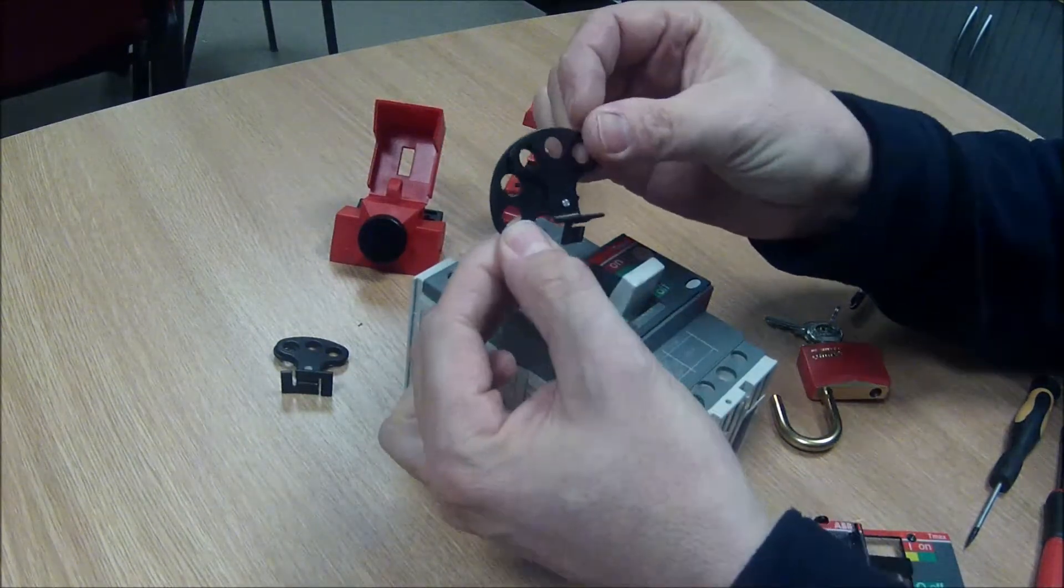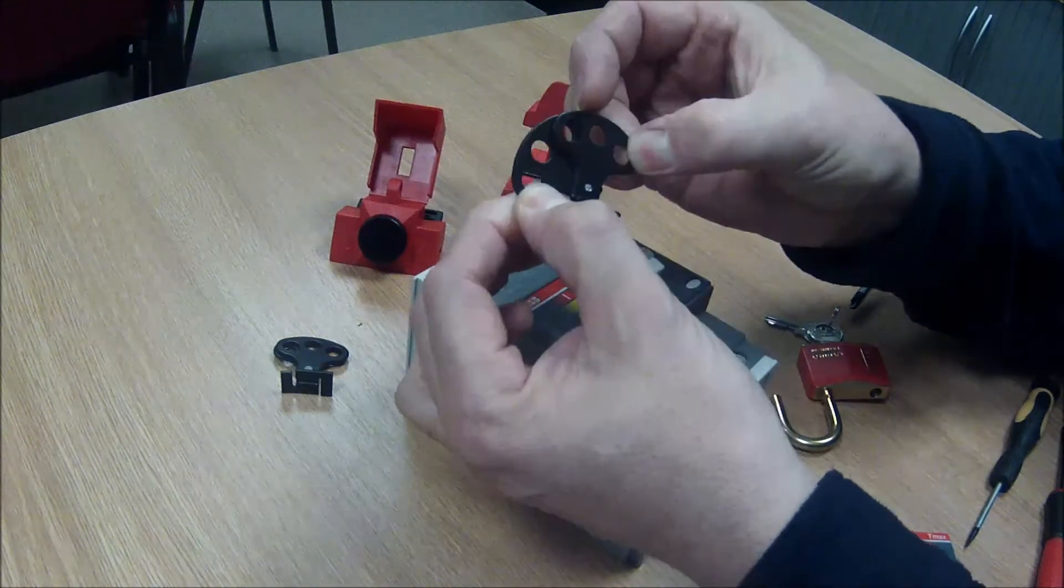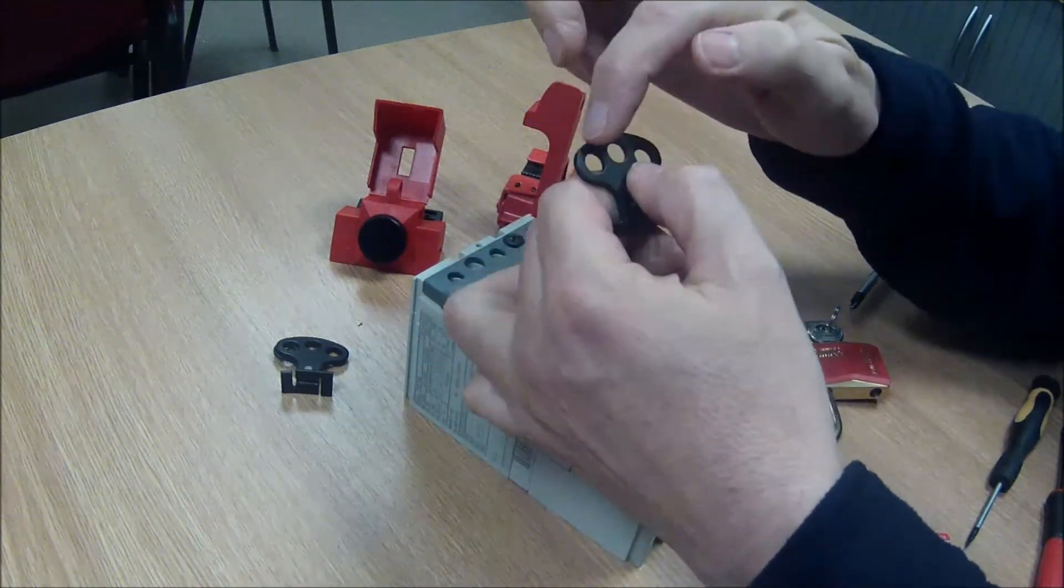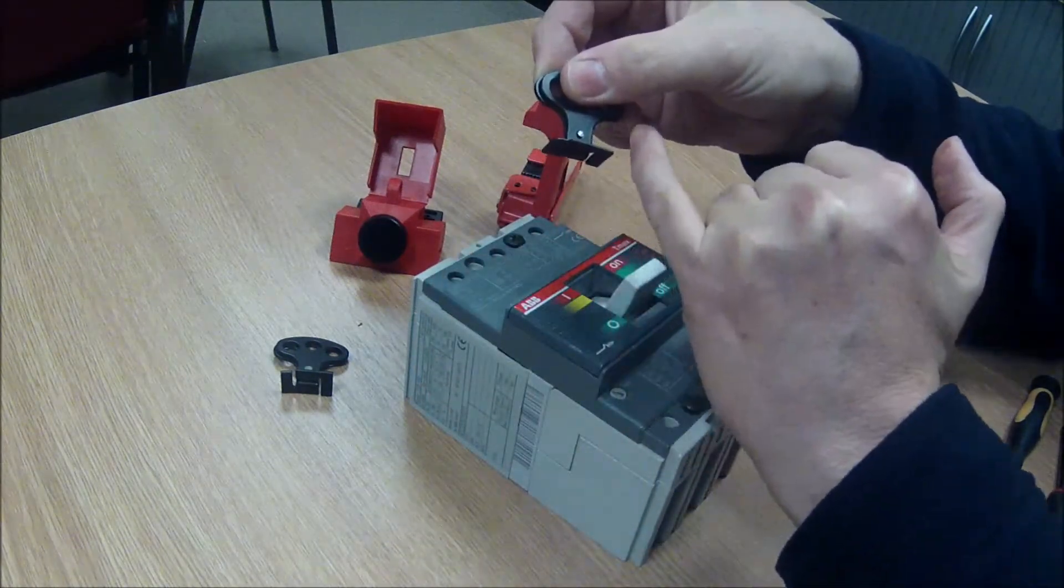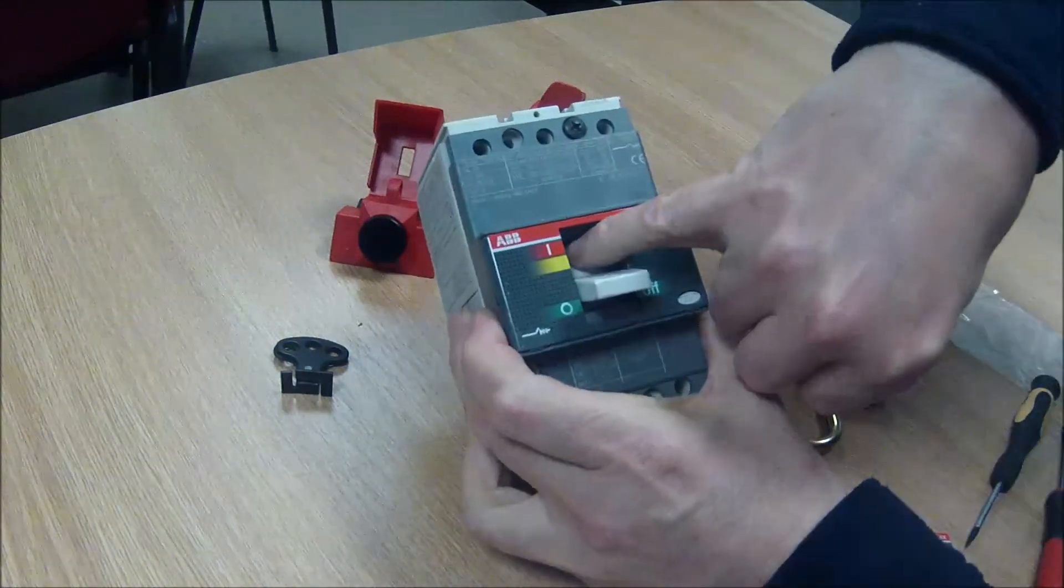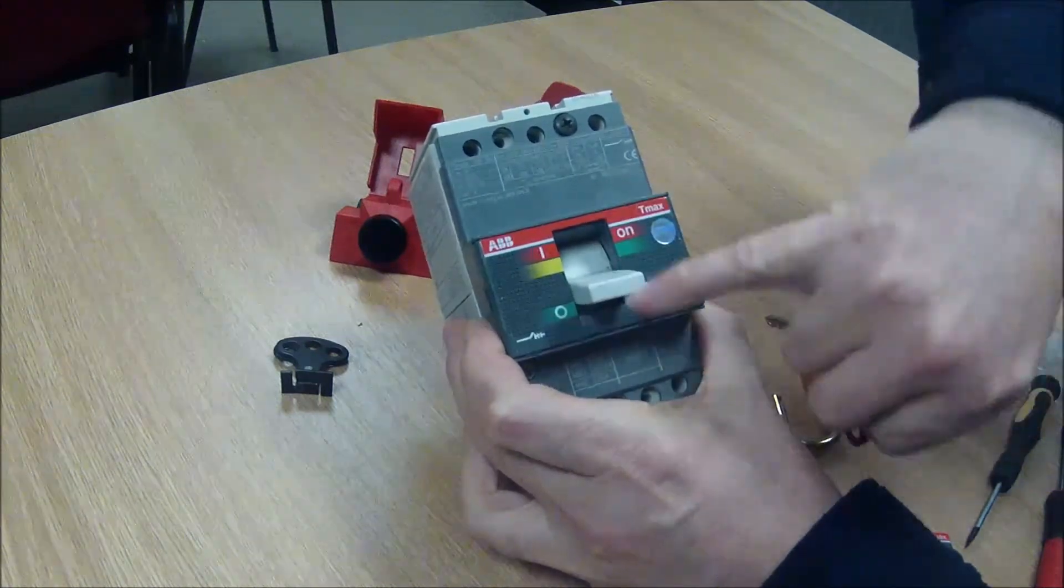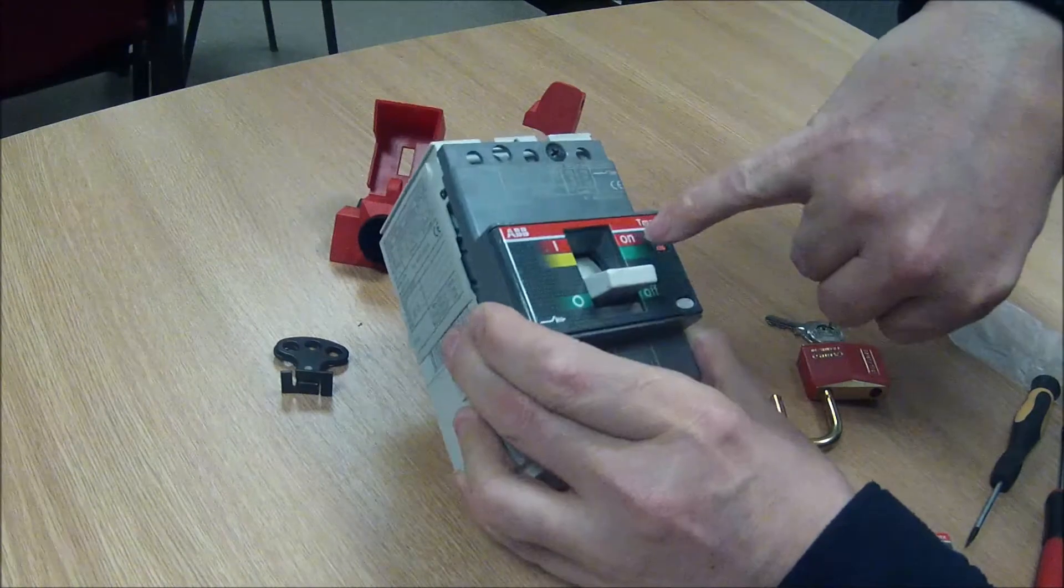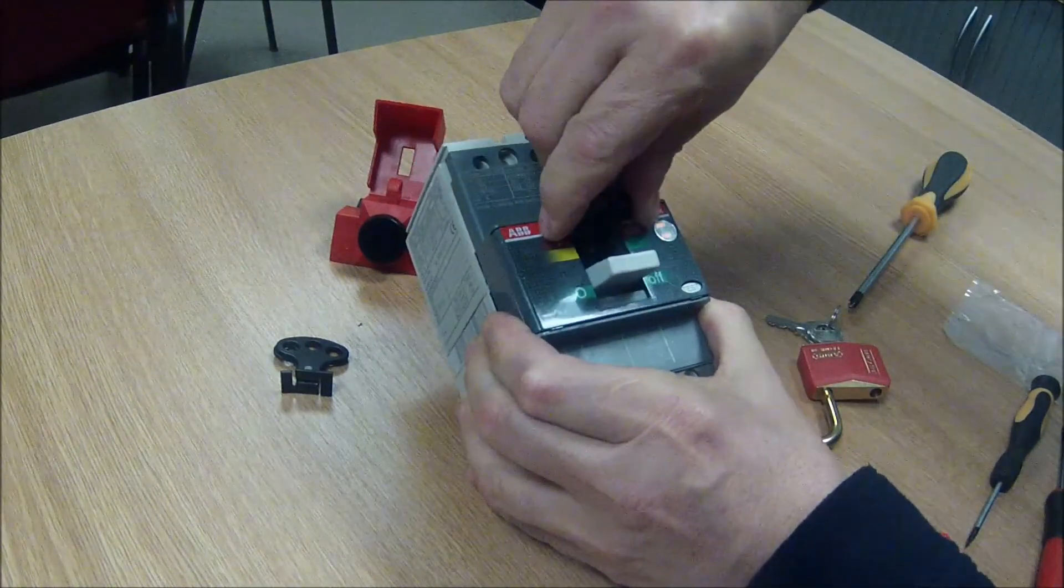Starting with the removable version, it's a two-part assembly which hinges like this. These are the holes through which you put the padlock and these parts here engage with the breaker. I'm going to try and fit this here now. So inside the cavity of the breaker where the toggle switch throws, there's two little opposing cutouts.